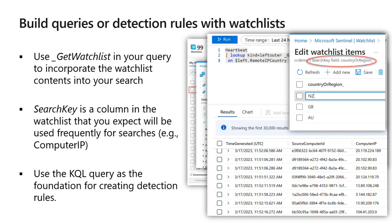The search key — when you click on edit watch list items — is here, for example, country or region. This is what we expect queries to hinge on: that people are going to be looking for country or region. That's the search key we're defining for this specific watch list.